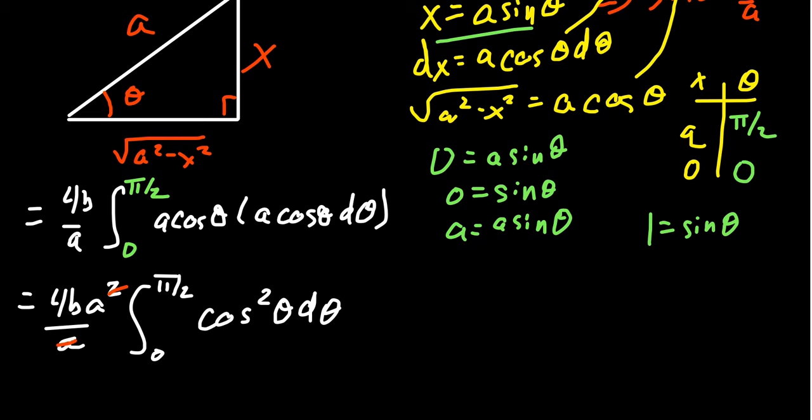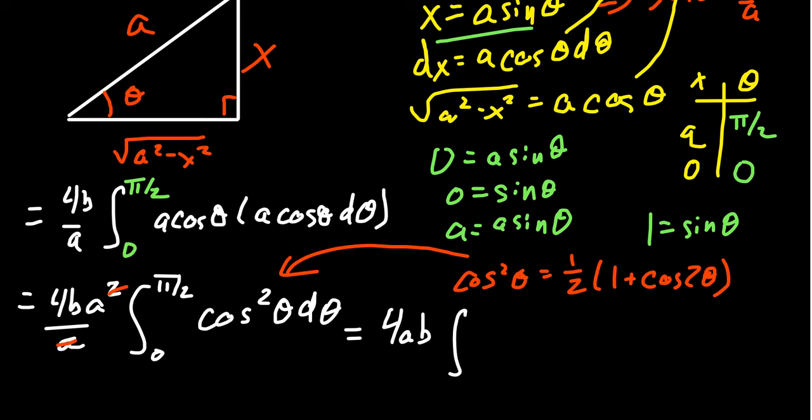How do we deal with cosine squared? Integrating that can be somewhat of a challenge. You want to use that half angle identity we've seen before. Specifically, cosine squared theta equals one half times one plus cosine of 2 theta. Make that substitution in.